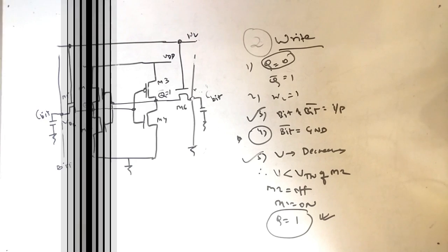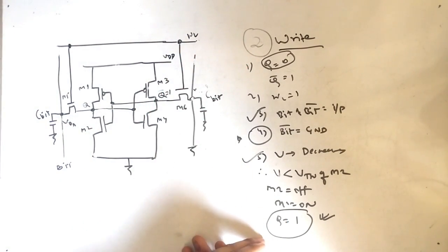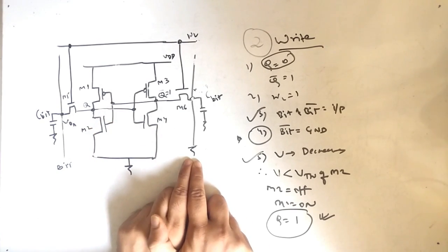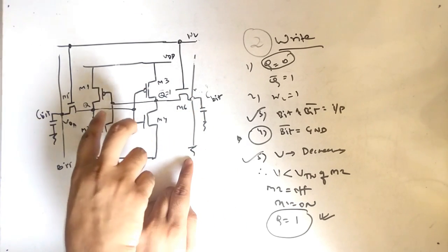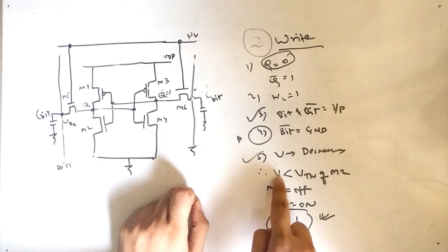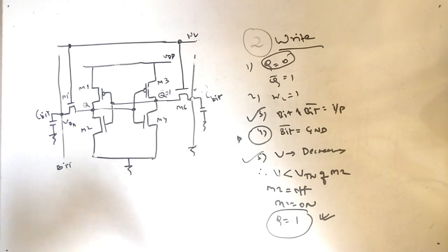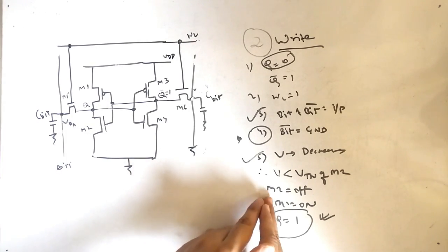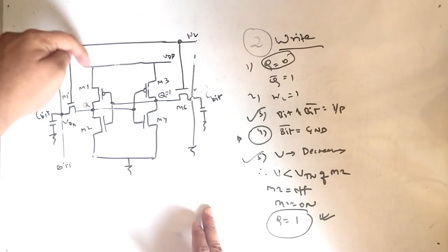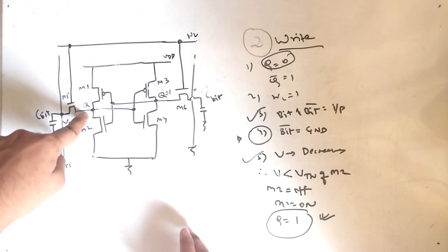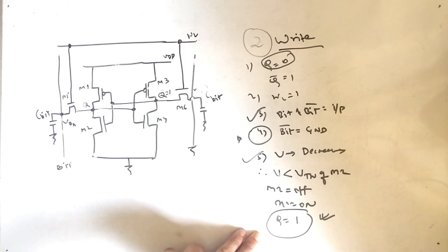To recap: the main part to change Q from 0 to 1 was forcing the bit-bar line to ground. We forced it because there would be a voltage difference, current will flow, and voltage will decrease. When voltage decreases below the threshold voltage of M2, M2 turns off, M1 turns on, and Q gets the value of VDD — so Q equals 1. We have successfully changed Q from 0 to 1.